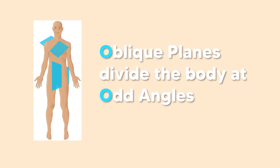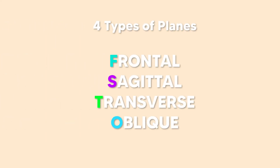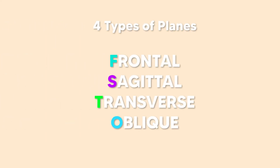The last type of plane is called an oblique plane, and it's basically any plane taken at an odd angle. We think of the O in oblique and that reminds us of odd angles. So again, real simple trick — all you have to do is look at the first letter of each of these planes and they'll remind you of how it's dividing and intersecting the body.